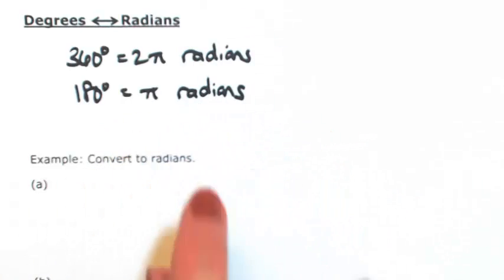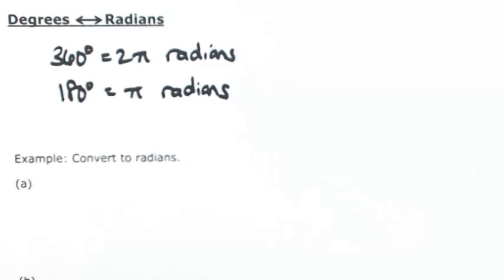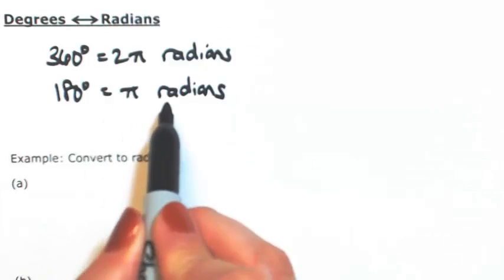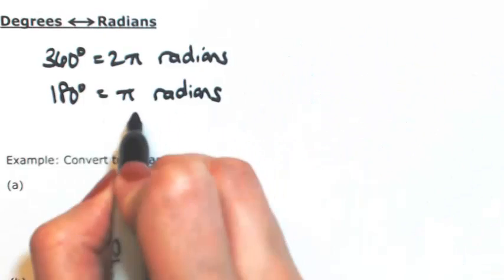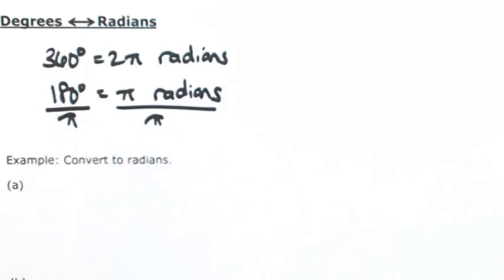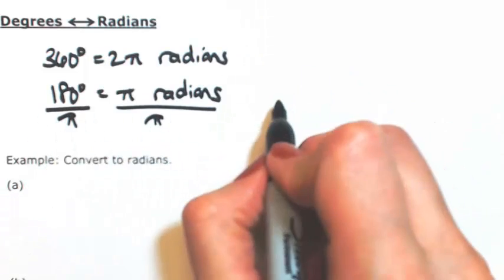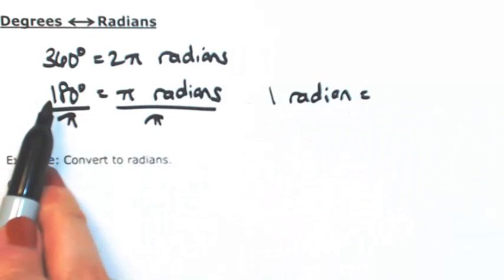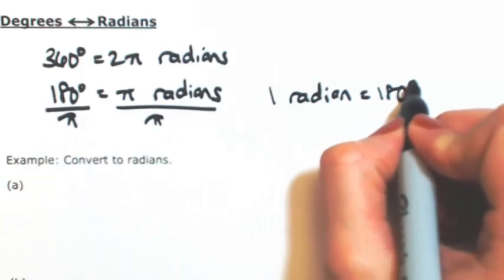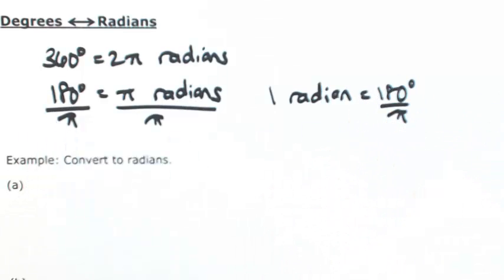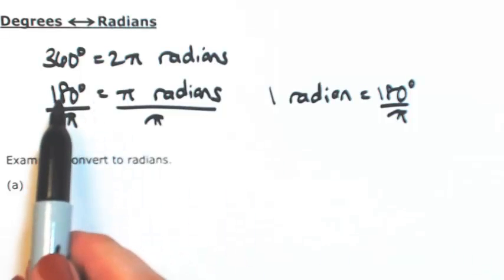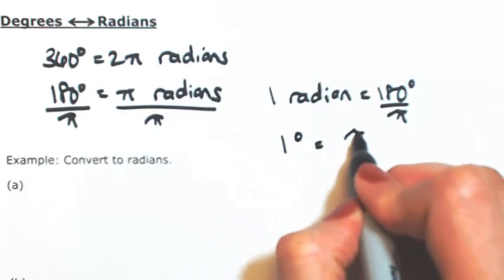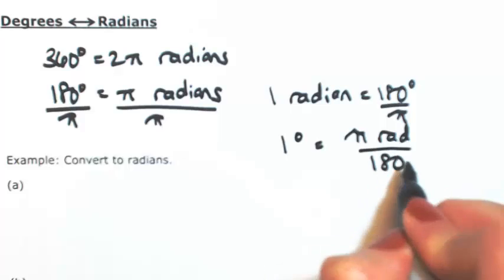So this conversion can actually tell us how to convert between degrees and radians. So if I were to divide both sides by pi, the pi would cancel. So that tells us that one radian is equal to 180 degrees divided by pi. I could have divided by 180, and then I would have gotten that 1 degree is equal to pi radians over 180.